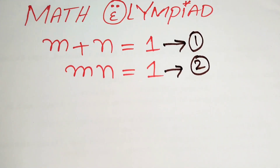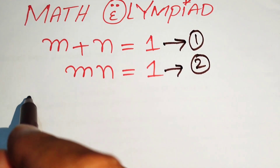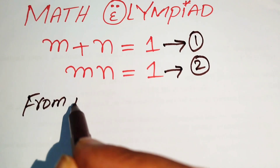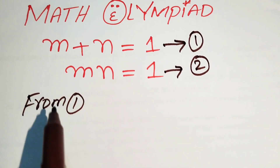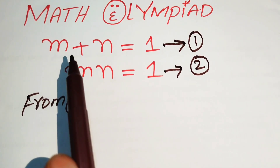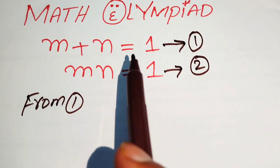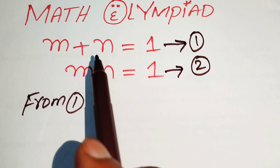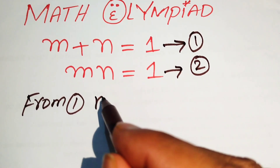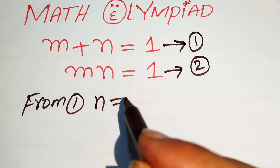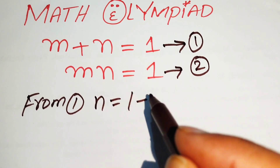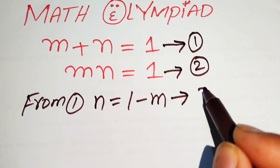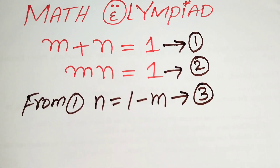Now we first focus on equation number 1. From equation number 1, we move m to the right-hand side, so we get n equals to 1 minus m, and we call this equation number 3.